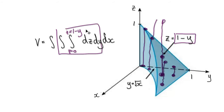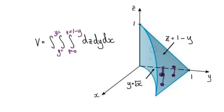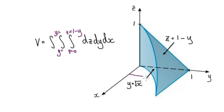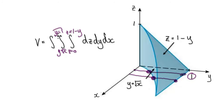Now looking at y — if I'm using dy, it's going to be y equals something. I'm going to move parallel to the y-axis. I start at square root of x, which is this curve here, and then I stop when I get to y equals 1. So the y integral runs from square root of x to 1.